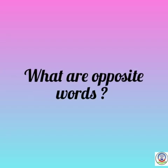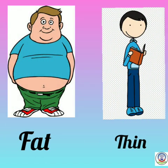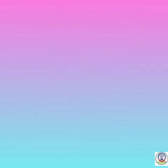Opposite words शुरू करने से पहले मैं बताना चाहूंगी कि opposite words का मतलब क्या होता है। Opposite words का मतलब होता है विरोधी शब्द — जैसे big, small यानी बड़ा, छोटा; fat, thin यानी मोटा, पतला। इस तरह से हम विरोधी शब्द करेंगे, means opposite words.